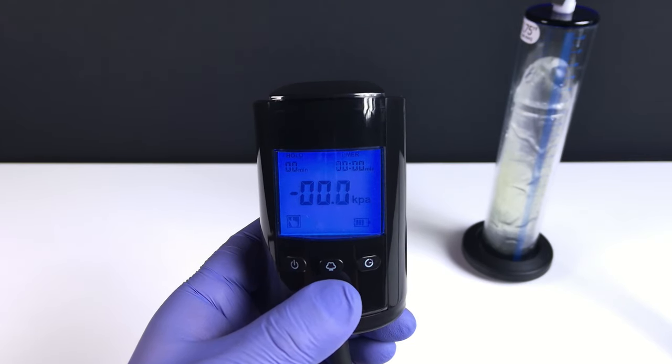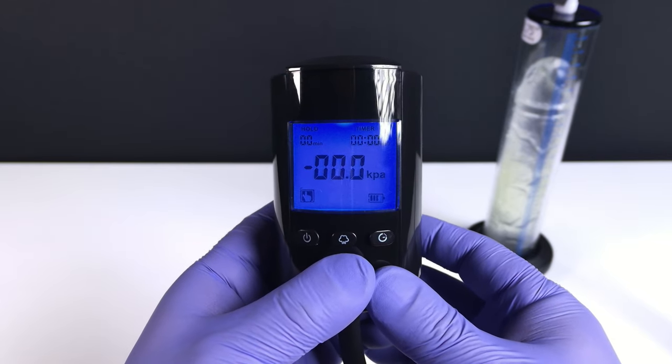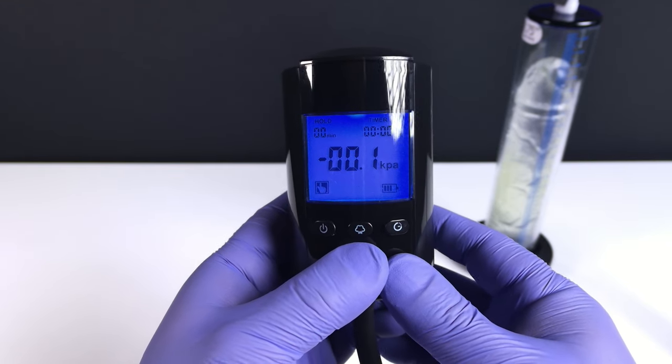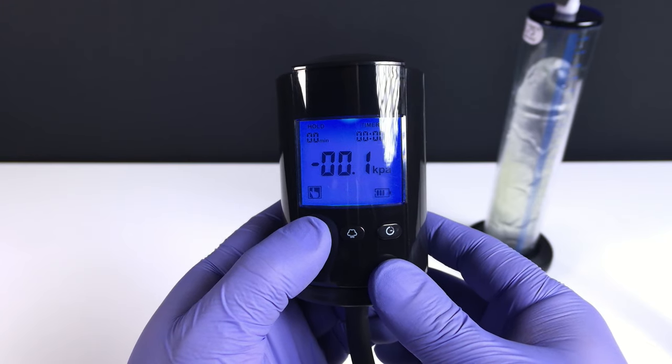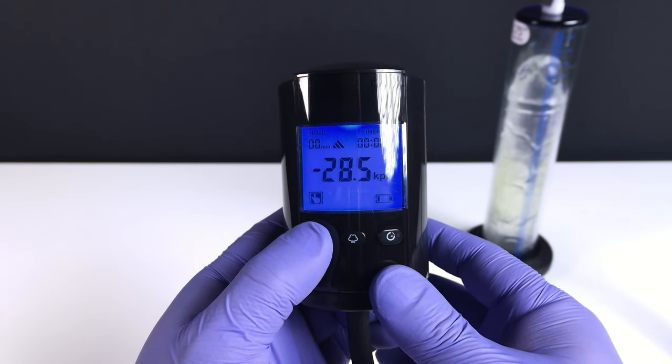Now let's talk about the function that we all really came here for, and that is the interval function. So what I'm going to do is find my pressure. For this demonstration, we will do 30 kilopascals or roughly 10 inches of mercury.